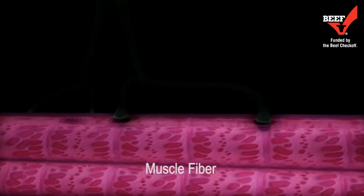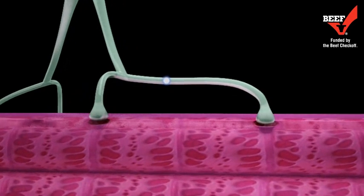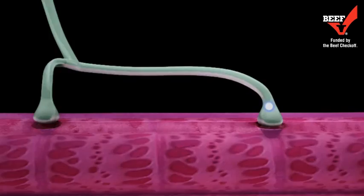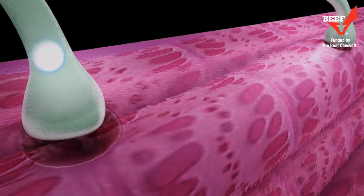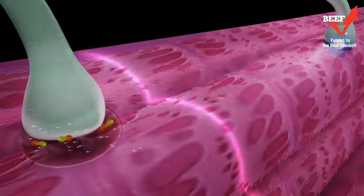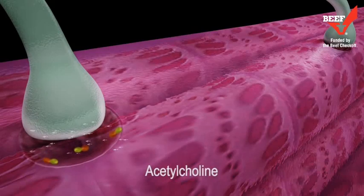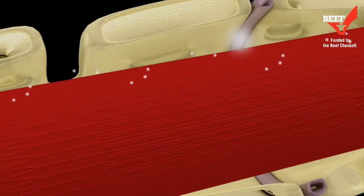Each muscle contraction begins with an electrochemical reaction called an action potential, arriving at the surface of the cell membrane, the sarcolemma. The sarcolemma is depolarized after the release of acetylcholine due to a flux of sodium into the fiber, allowing the action potential to be transmitted via the T-tubules to the sarcoplasmic reticulum.